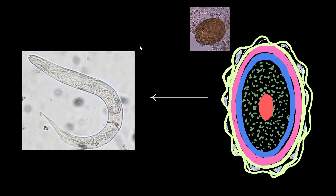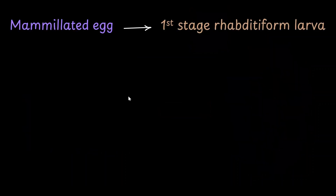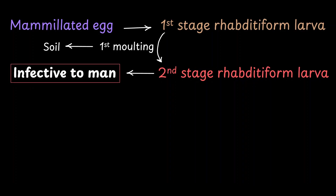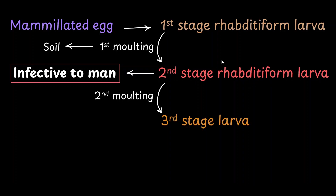These eggs undergo changes to produce larval worms through multiple stages called molting. Molting means shedding — when the worm grows through various stages of development inside a shell, it eventually sheds the shell and creates a new one. The mammillated eggs turn into the first stage rhabditiform larva, which undergoes first molting to produce the second stage rhabditiform larva. This molting happens when the fecal matter is present in the soil. The second stage rhabditiform larva is considered to be the infectious stage with respect to humans. The second stage then undergoes a second molting to produce the third stage larva.